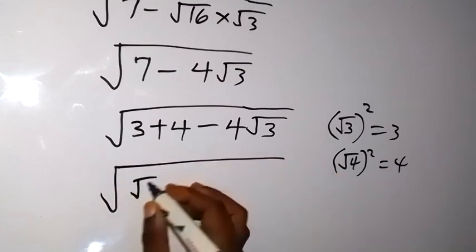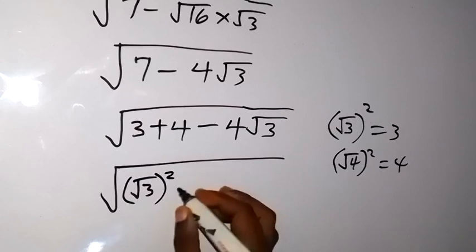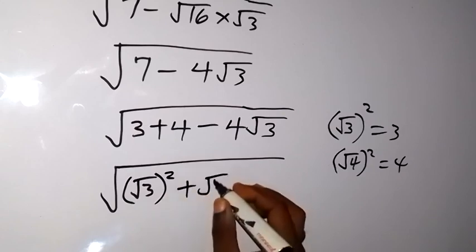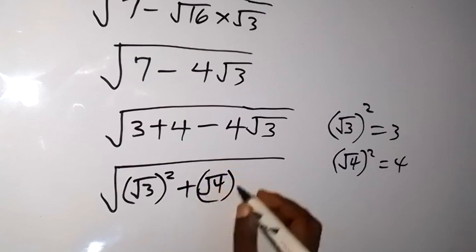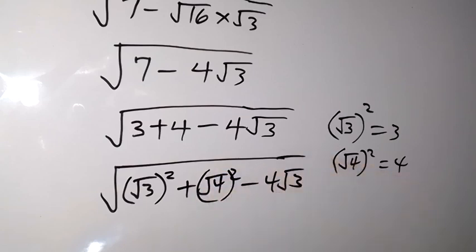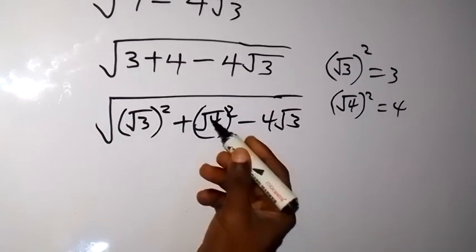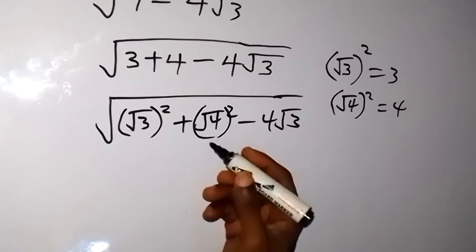3 squared, then plus root 4 also squared, then minus 4 root 3 that we had before. Then from here now we can see that here root 4 is 2. Root 4 is 2 and 2 squared is 4.